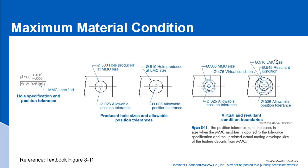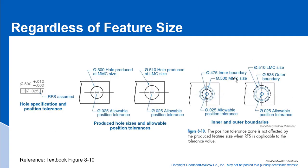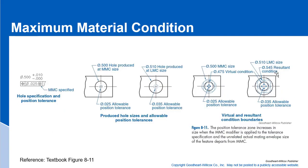At 510 thousandths, comparing back to the RFS slide, that was your outer boundary for RFS. With MMC, the outer resultant condition is the LMC plus that bonus tolerance, taking you all the way up to 545 thousandths.